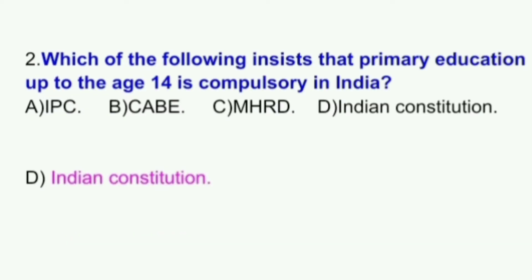Which of the following insists that primary education up to the age 14 is compulsory in India? A) IPC, B) CABE, C) MHRD, D) Indian Constitution. The answer is D, Indian Constitution.